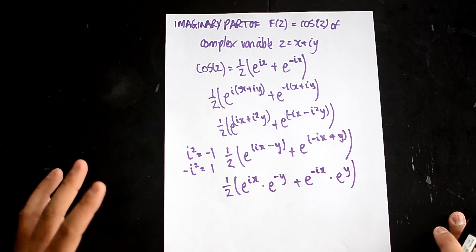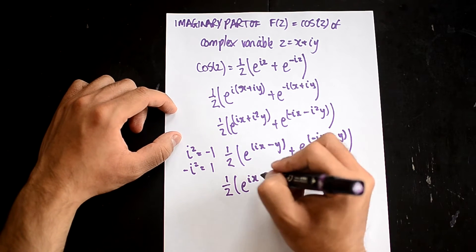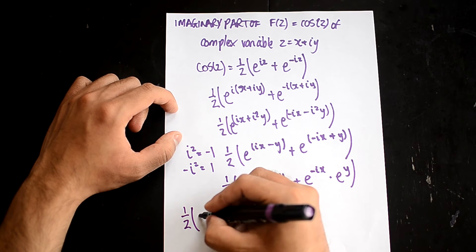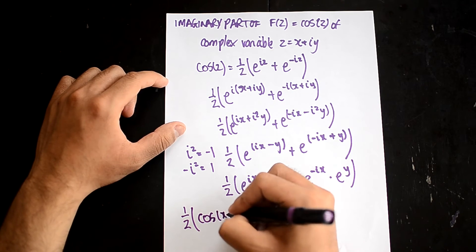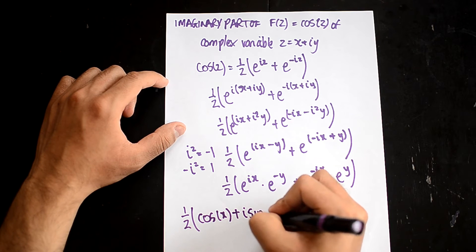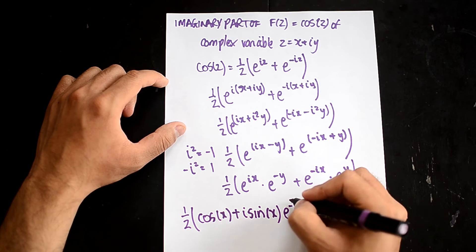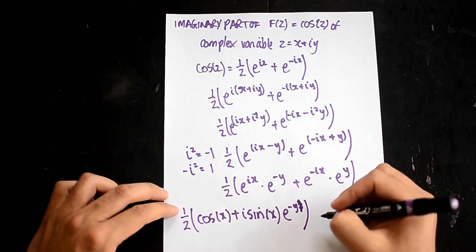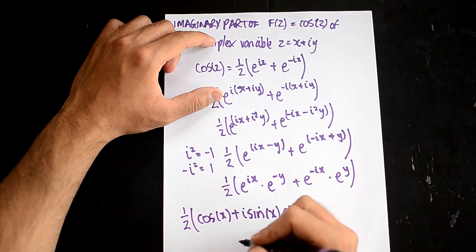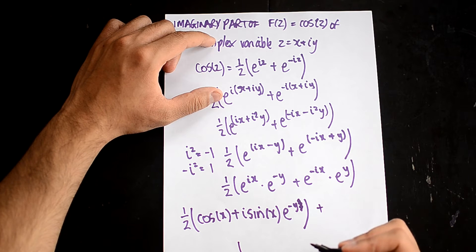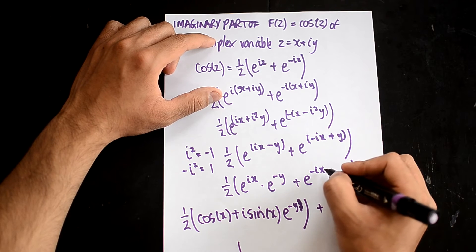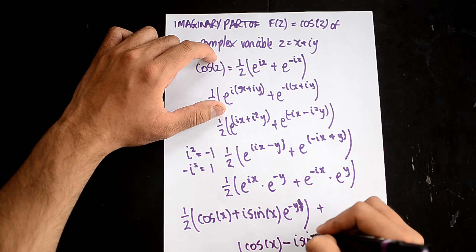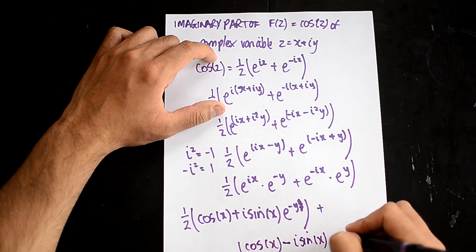We now have it in another form we can work with. You should know that e^(ix) equals cos x plus i sin x, multiplied by e^(-y). And then e^(-ix) equals cos x minus i sin x, multiplied by e^(y). So there are two more things you need to remember here.